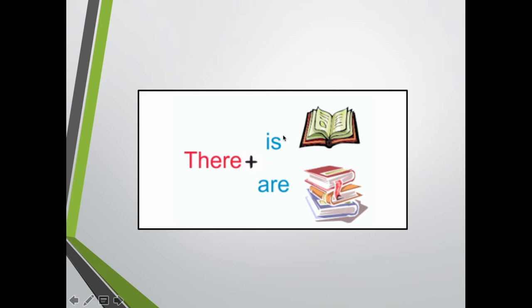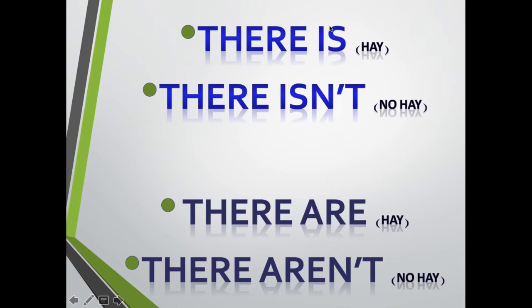First of all, we have there is for singular and there are for plural. But wait. What is the meaning of there is and there are? There is means hay. There isn't means no hay in Spanish. Are you following me? There are means hay. And there aren't means no hay. Again. But what is the difference? The difference is those phrases are for singular and those phrases are for plural.